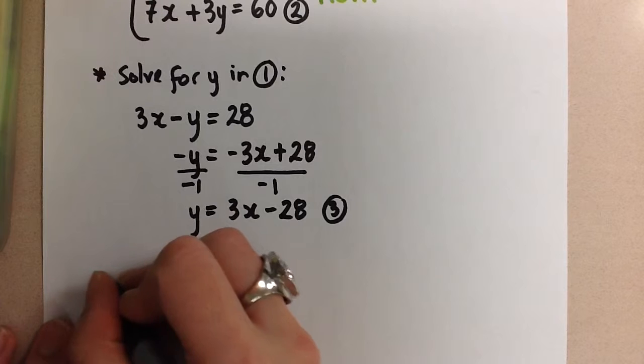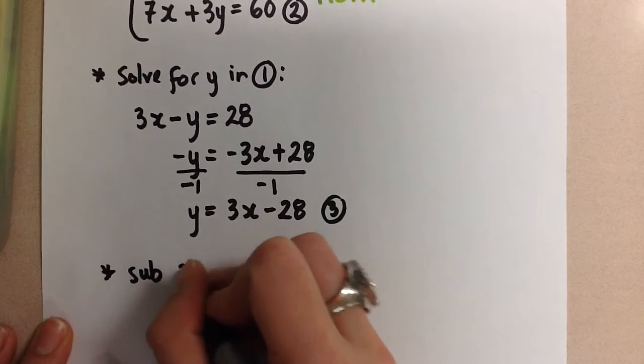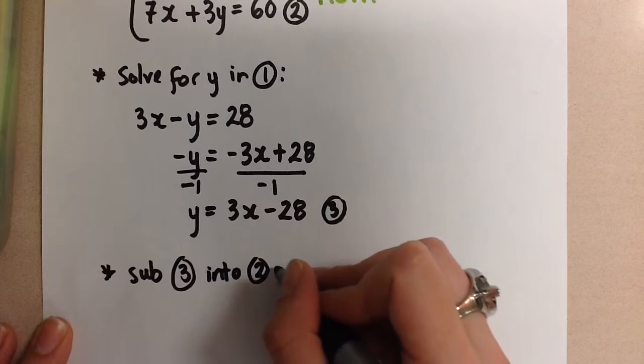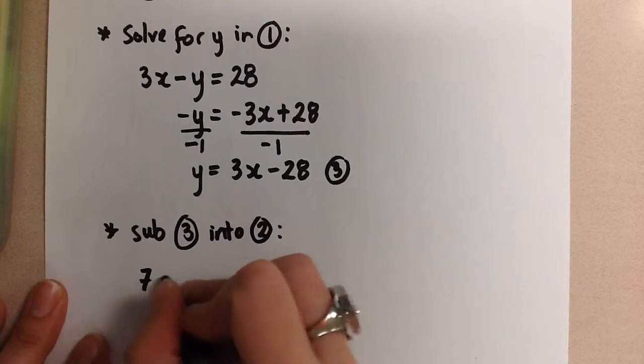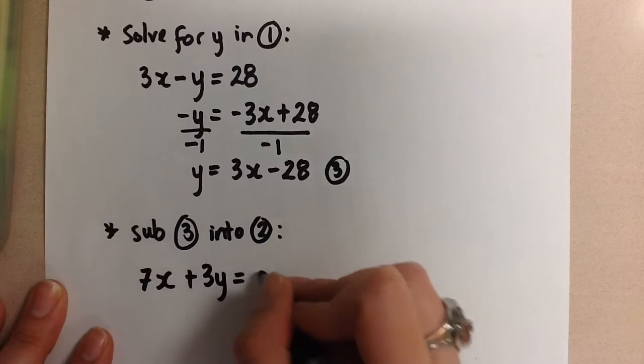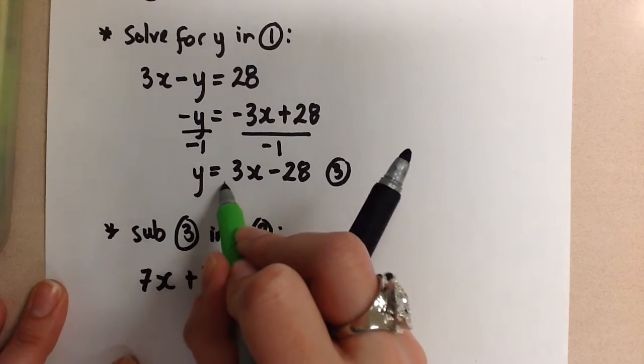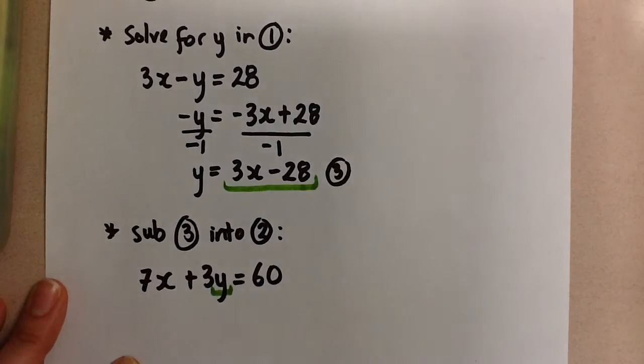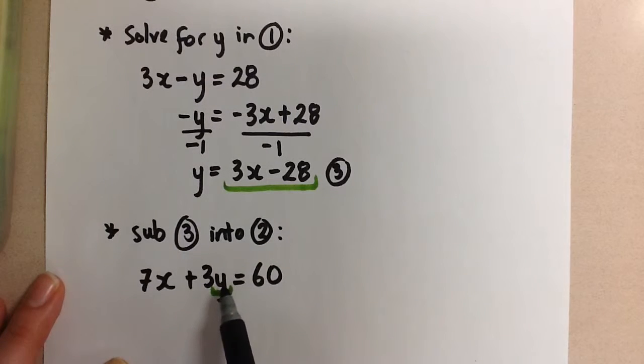So I'm going to now sub equation three into equation two, and then I'm going to solve for the x variable that's going to be left there. So equation number two is 7x plus 3y equals 60. I'm going to take this y equals 3x minus 28, and I'm going to sub it in for y here. Because y equals 3x minus 28, that means y is 3x minus 28, and I can sub it in to the equation here.